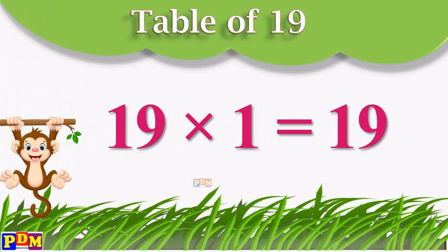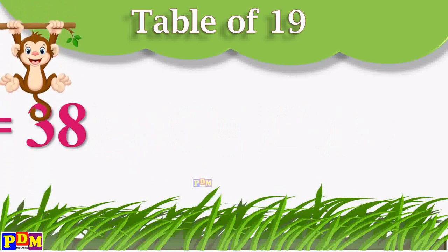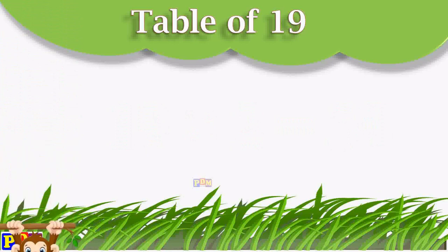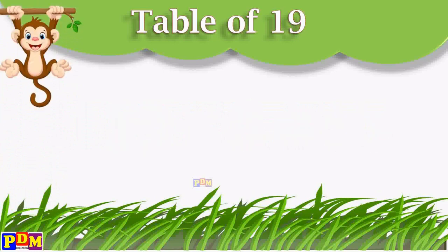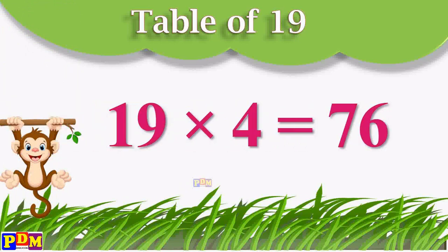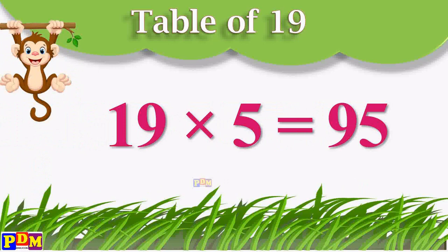19 ones are 19. 19 twos are 38. 19 threes are 57. 19 fours are 76. 19 fives are 95.